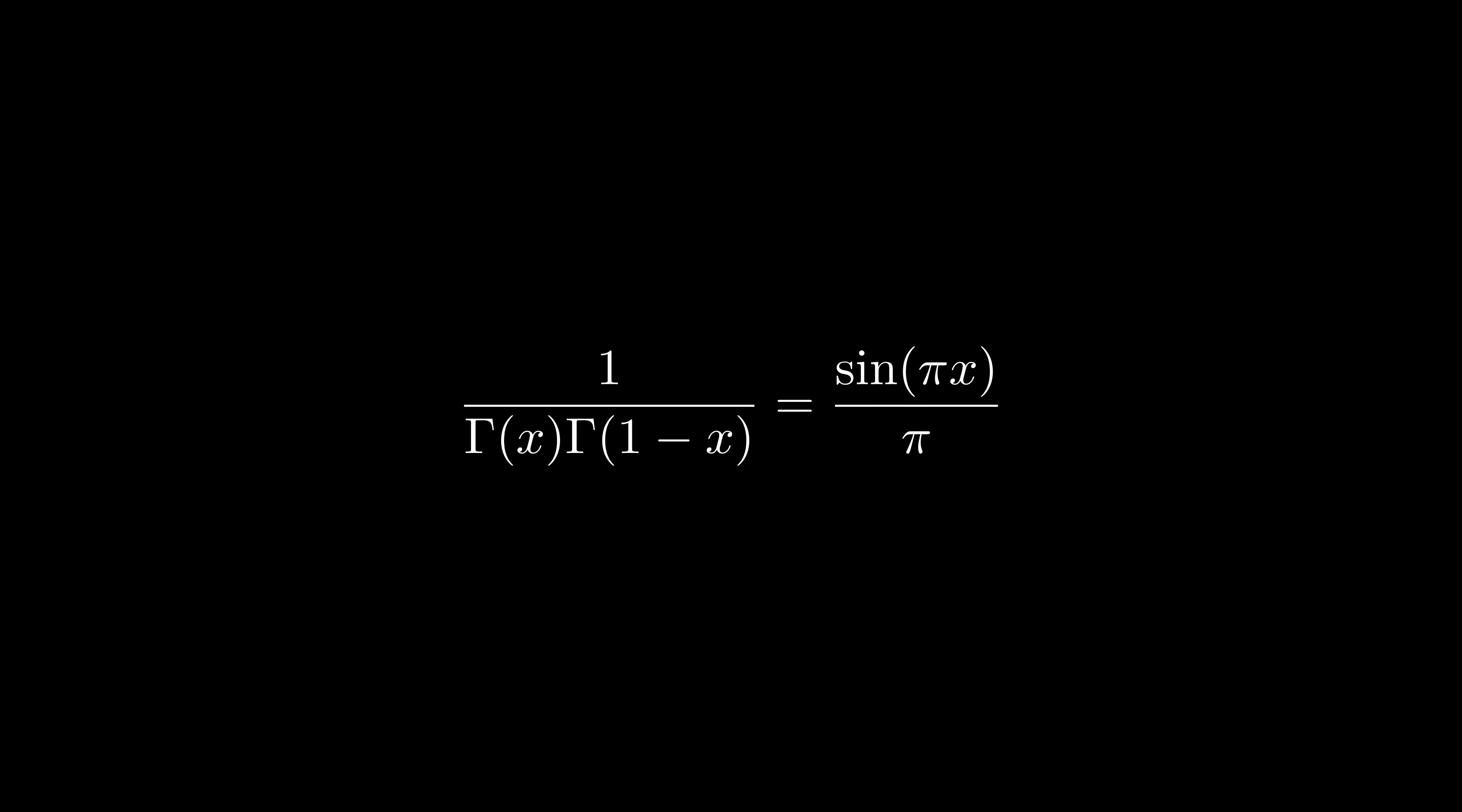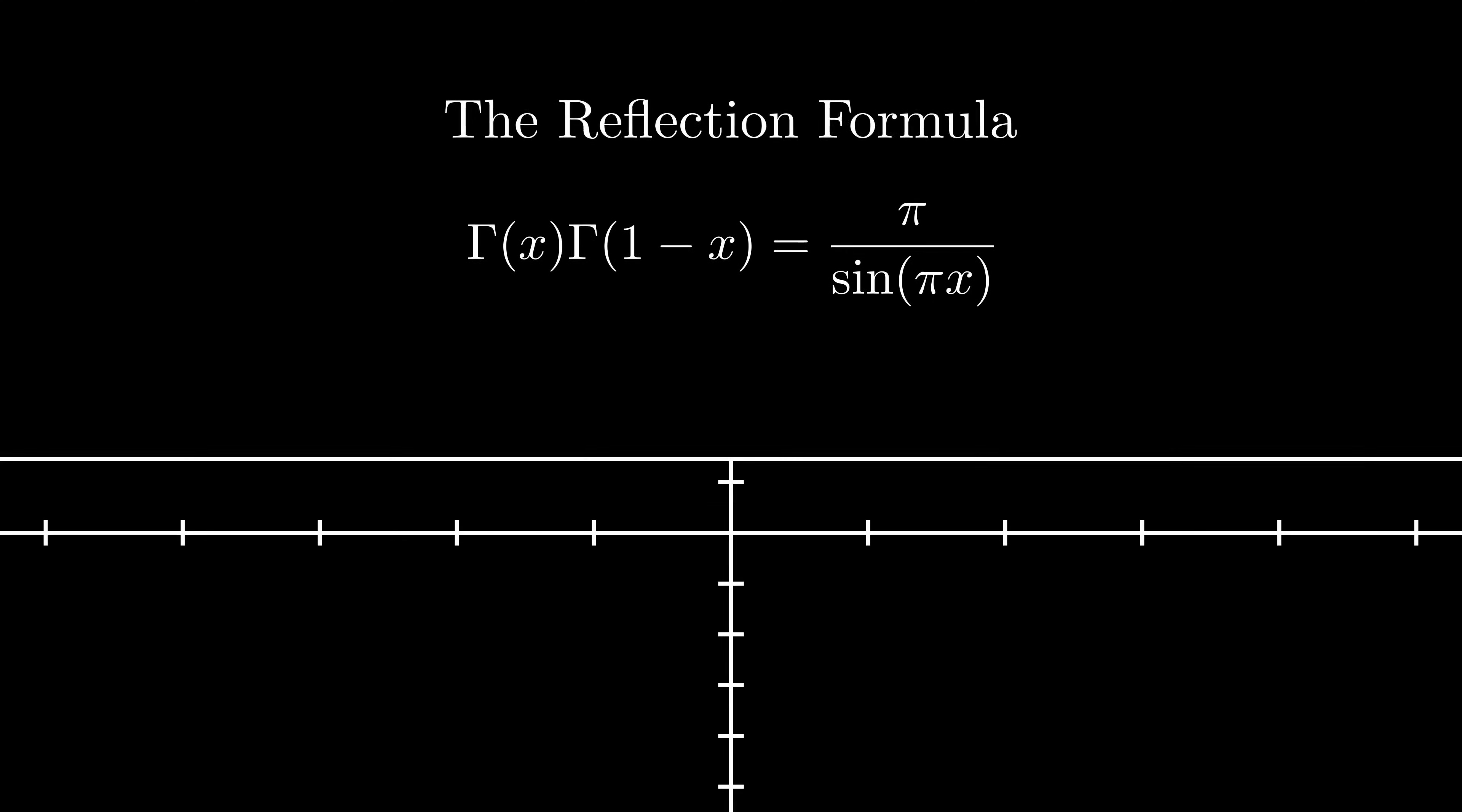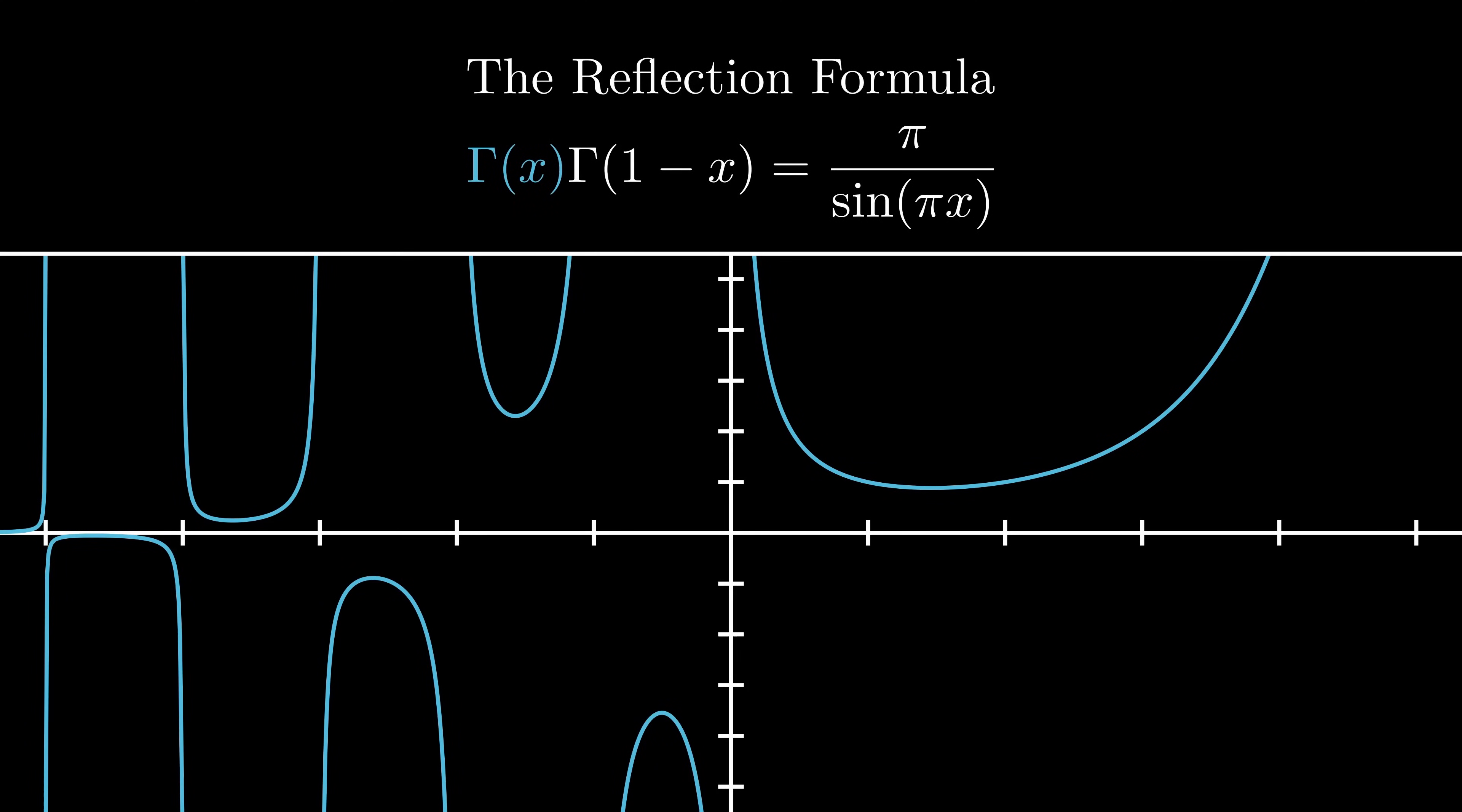This equation is the gamma function's reflection formula, and it's usually written as the reciprocal of what we found, because it looks a bit neater that way. A reflection formula is just a name for an expression that relates a function to a horizontally flipped, or reflected, copy of itself. In this example, we're relating gamma of x to gamma of 1 minus x, which is its reflection across x equals 1 half.